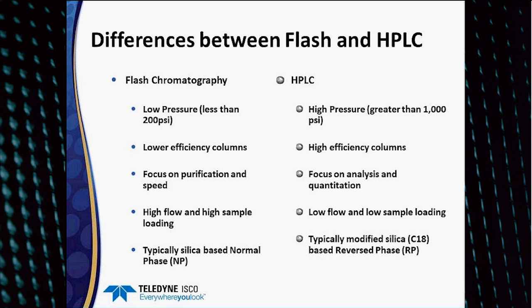Flash chromatography is designed as a low pressure technique, typically less than 200 PSI, with lower efficiency columns. The focus of flash is on purification and speed — the goal is to prep as much material as possible, purify it in a single run, and make that run as fast as possible. Typically, flash chromatography uses silica with normal phase solvents.